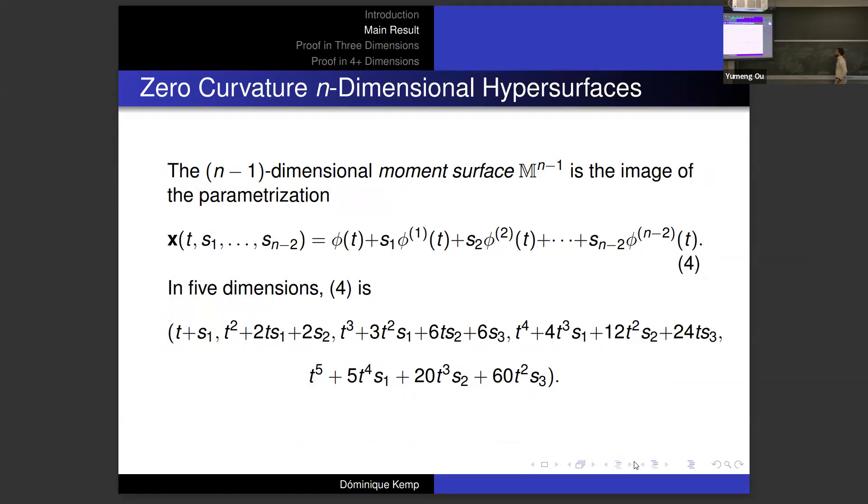What are the zero curvature n-dimensional hypersurfaces that are the subject of focus here? You take the moment curve phi, and then you look at all of the n-2 derivatives—derivatives of order 1 up to order n-2. Then for each such derivative, you introduce a new parameter S_i, and we extend by S_i along that derivative vector. In five dimensions, this parameterization looks as so, which may not seem too insightful, but there's actually interesting algebraic structure here, which makes it possible to decouple.